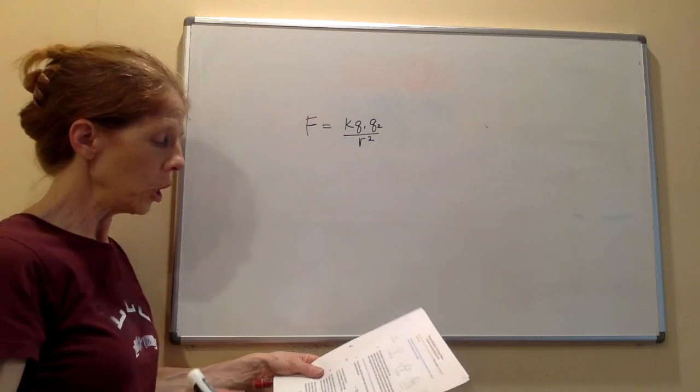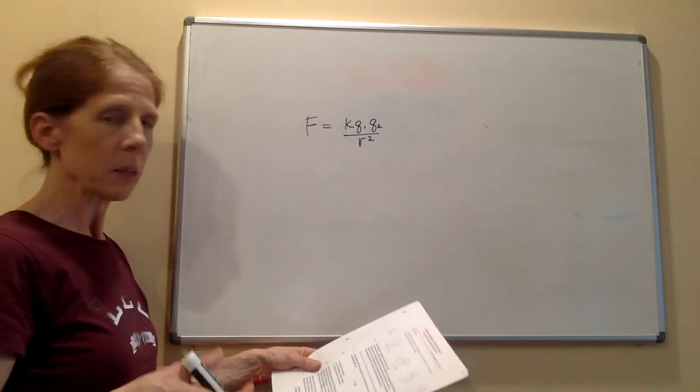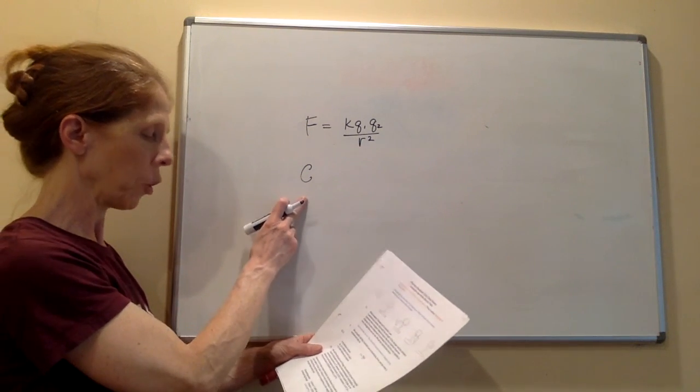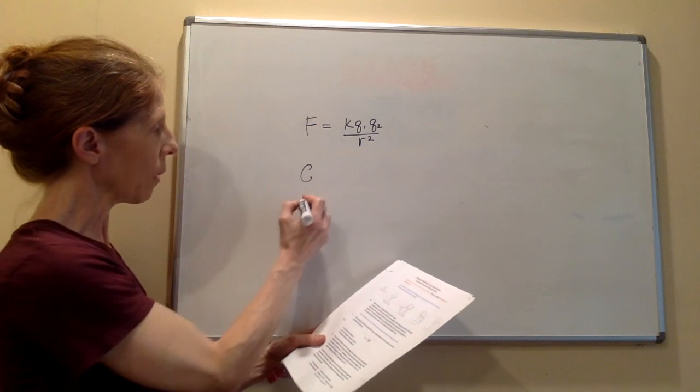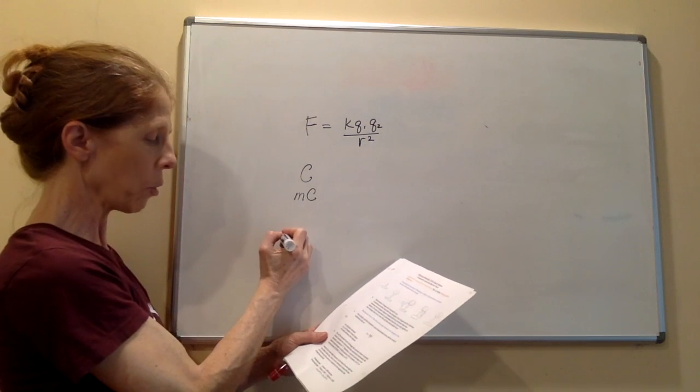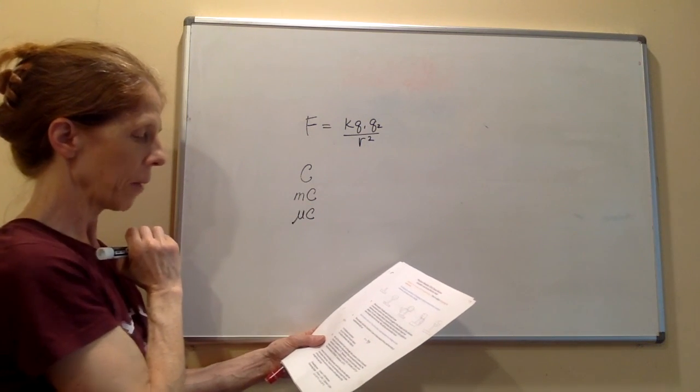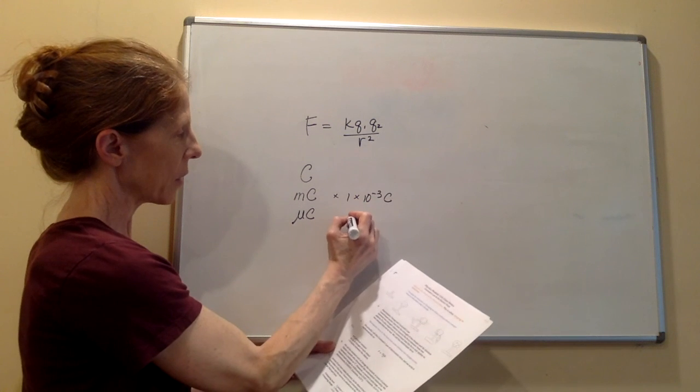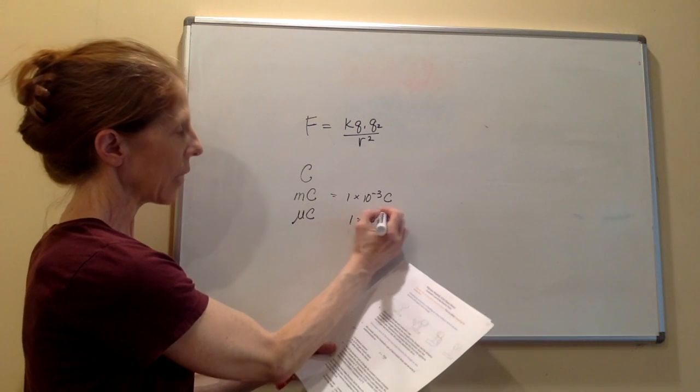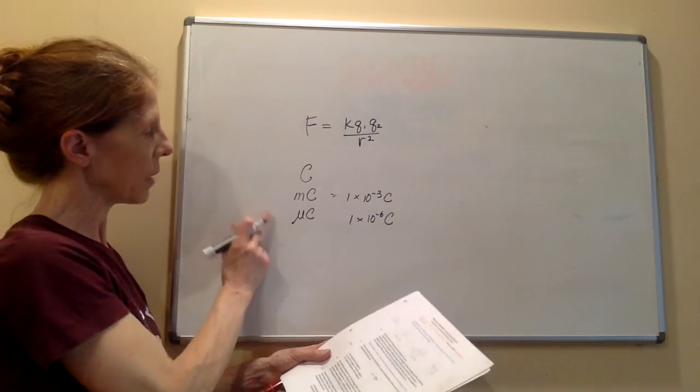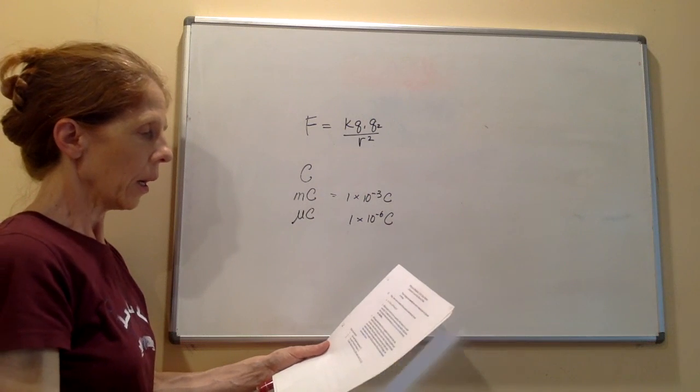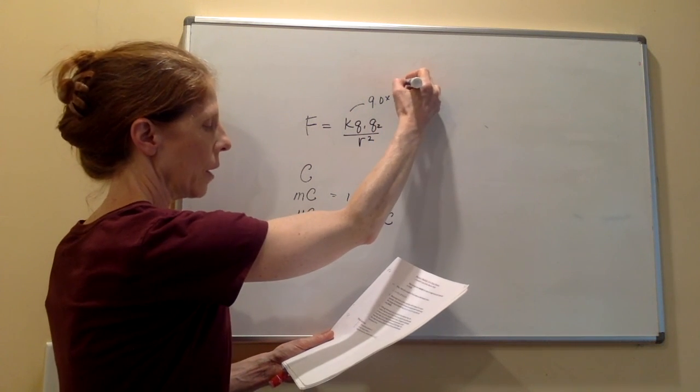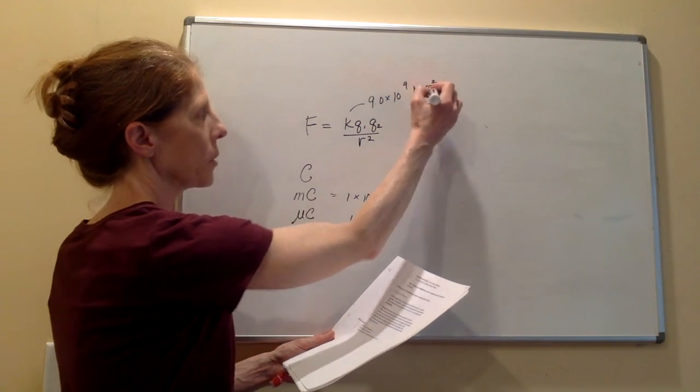We call the standard unit of charge the Coulomb, in honor of scientist Charles Coulomb, who discovered this mathematical relationship. It's a very large charge, and most of the time we're not going to work with Coulombs. Most of the time we're going to either work with millicoulombs, which we would write as mC, or microcoulombs. This is 1 times 10 to the negative 3rd Coulombs. This is 1 times 10 to the negative 6th Coulombs. And then also this K that we have here, the constant is 9.0 times 10 to the 9th newtons meters squared per Coulombs squared.